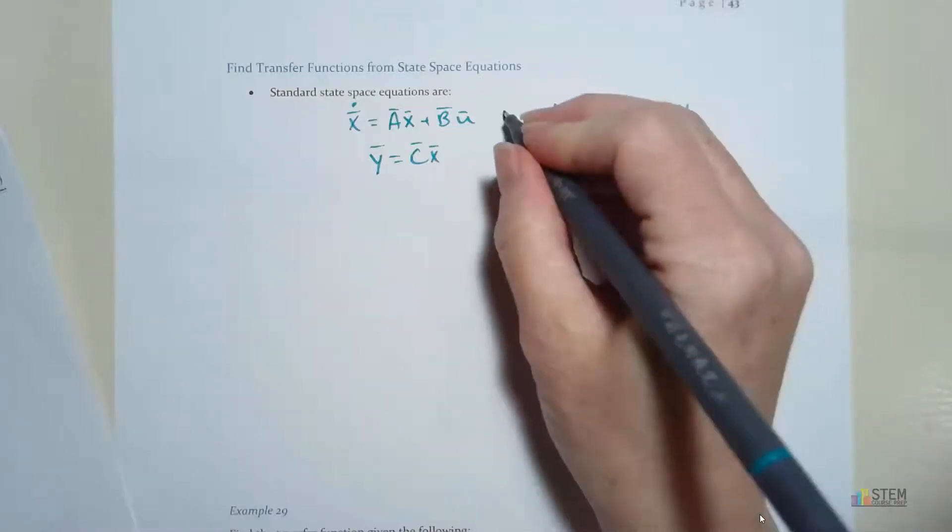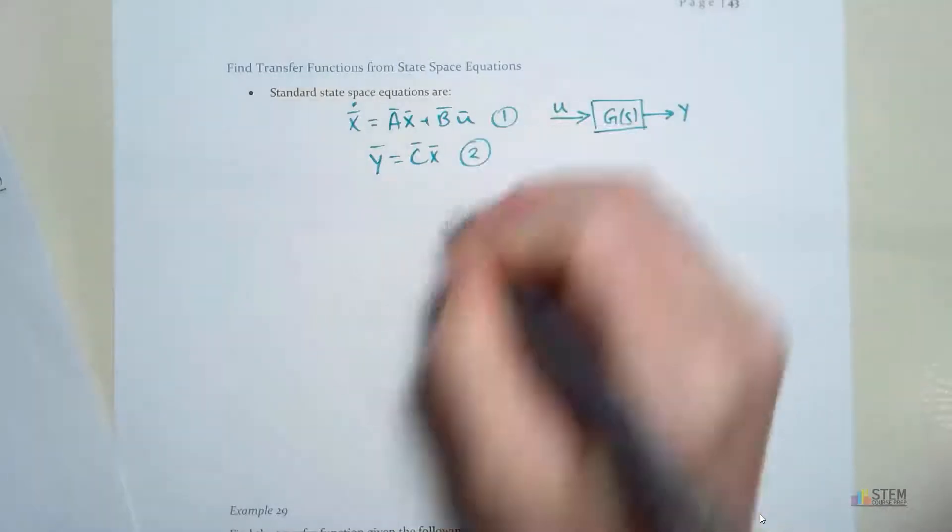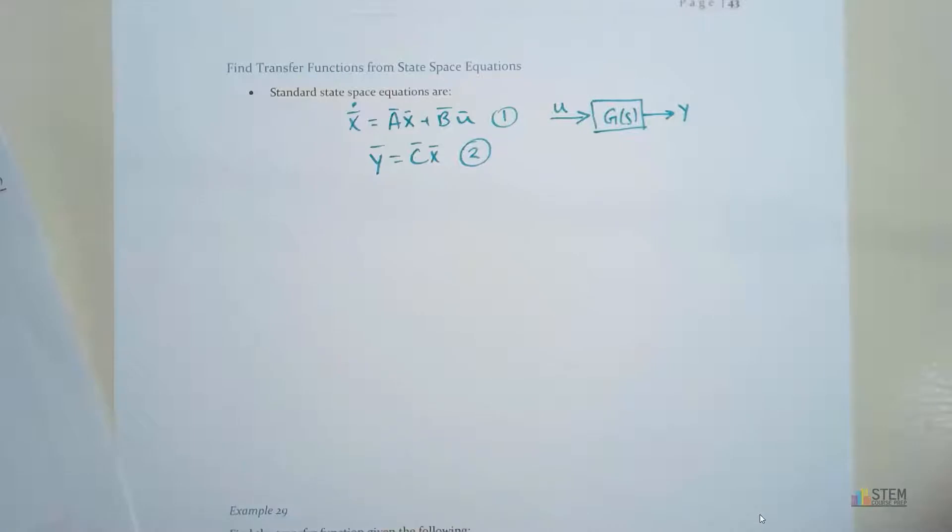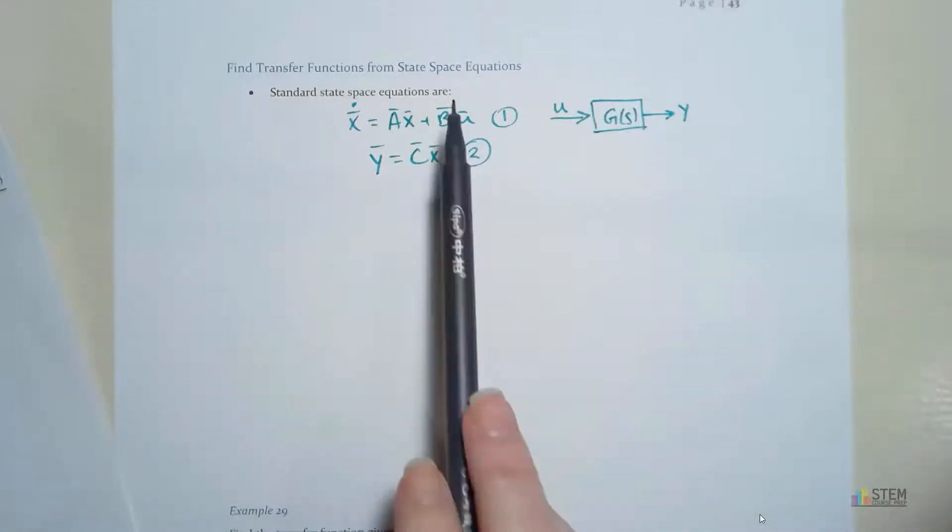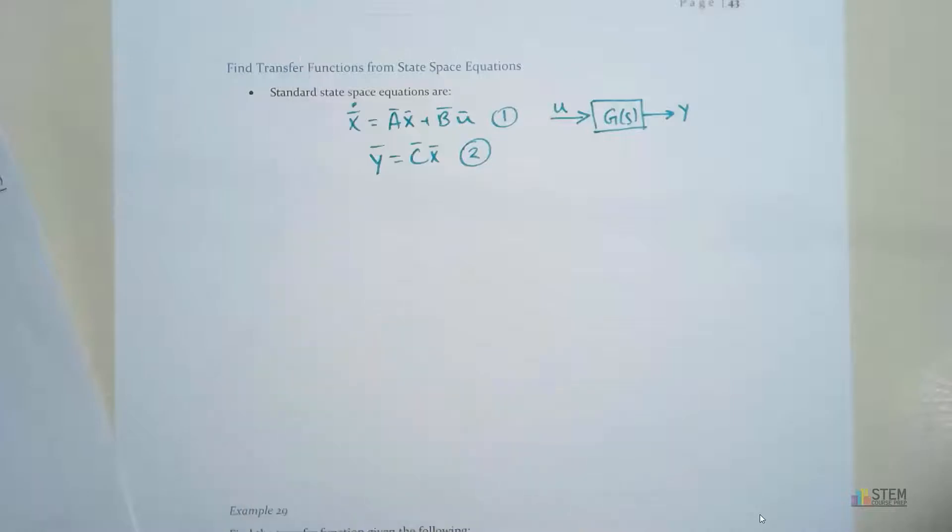So just so we're sure on what's input, what's output. Now let's call this equation 1 and this one equation 2. And what we're going to do is we're going to derive the equation we need to convert from state space over to transfer functions. And this is actually a really simple equation.